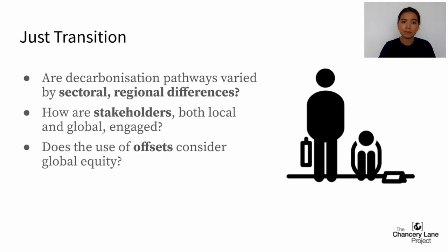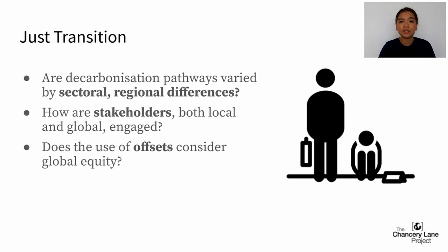A net zero transition must be just, both as a matter of principle and in order to get the buy-in of our population. Considerations of equity feature in all of the elements discussed. When looking at decarbonisation pathways, might they be slower for regions that are underdeveloped and require more investment in infrastructure, or for industries where emissions are hard to reduce? When implementing these plans, are the communities and workers impacted brought along with the change? Offsetting is also an international business — where are your offsets being anchored and how do they impact the communities around them?